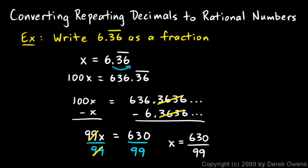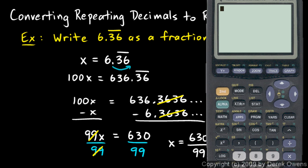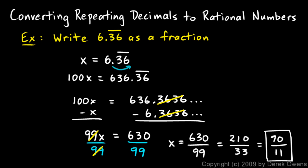I can reduce that a bit — both of those are divisible by 3. Divide the top and bottom by 3, and that gives me 210 over 33. Those are both divisible by 3 again: 210 divided by 3 is 70, and 33 divided by 3 is 11. So that reduces to simplest terms: 6.36 repeating is 70 over 11. I can check that on the calculator — 70 divided by 11 gives 6.3636 and so on. We're correct.